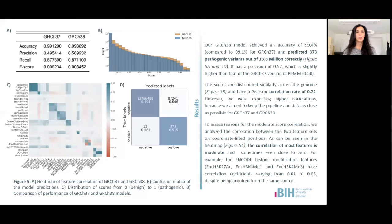Our model for GRCh38 achieved an accuracy of 99.4% and predicted 373 pathogenic variants correctly out of almost 14 million. The scores of GRCh37 and 38 are distributed similarly and have a correlation rate of 0.72, which is much lower than we were expecting since during the entire process we aimed at keeping the pipeline and the data sets as close as possible to the REM for GRCh37.